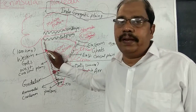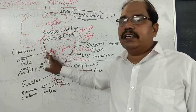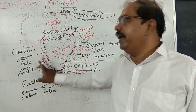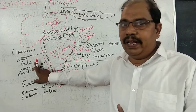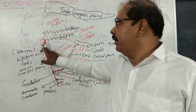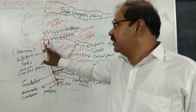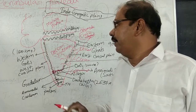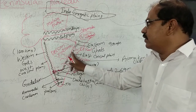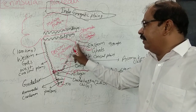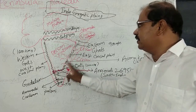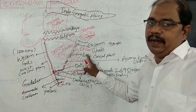The western coastal plain lies between the western coast and the Arabian Sea. The eastern coastal plain is located between the eastern coast and the Bay of Bengal. The western coastal plain is narrow, very narrow, while the eastern coastal plain is broader.